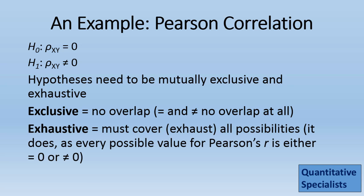Exhaustive means the null and alternative together must cover or exhaust all possibilities. And notice that they do, since every possible value for Pearson's R is either 0 or not 0. So it does exhaust all possibilities. Once again, it's exclusive because they don't overlap and exhaustive because they cover all possibilities.